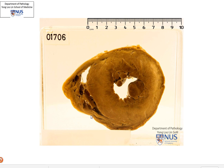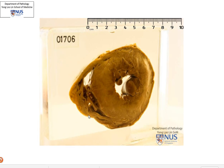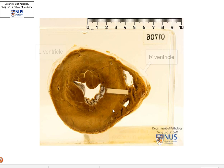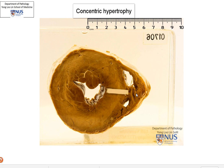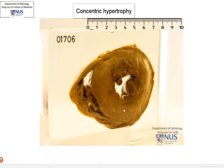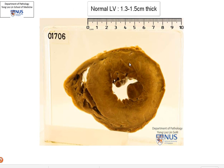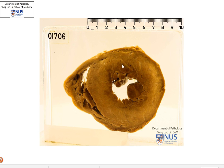This is a quick look at an abnormal hypertrophied left ventricle. We can see that the hypertrophy is usually concentric, meaning the whole thing is more or less equally thickened. The normal wall thickness of the left ventricle is between 1.3 to 1.5 cm, and you can see here that this is definitely thicker than that.